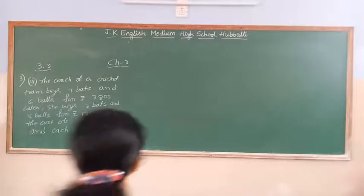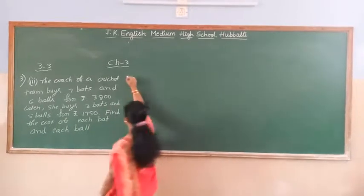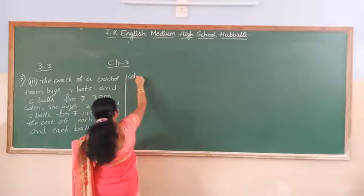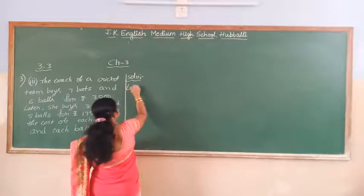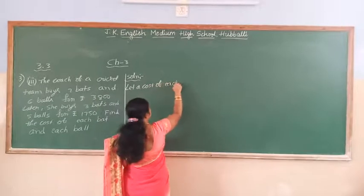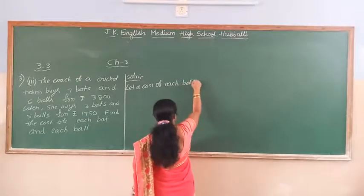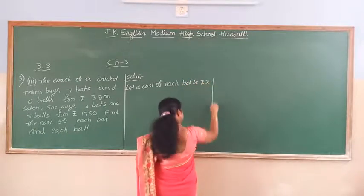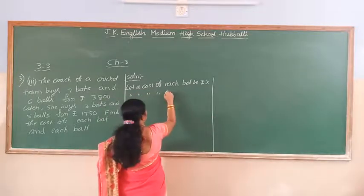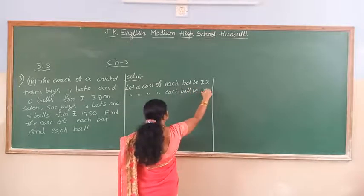Okay children. What we have to find out now. Find the cost of each bag and each ball. So, let. What I do find out now, I will take that only as X and Y. Let a cost of each bat be rupees X, and let a cost of each ball be rupees Y.